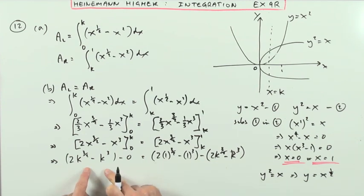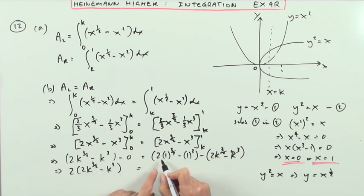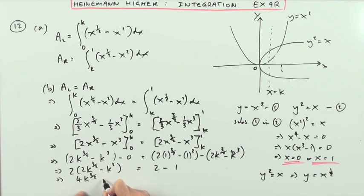Now that can go over and join this one. So there will be 2 of them on this side. So I've got 2 times 2k to the 3 upon 2 minus k cubed. It's equal to, and that part is just going to come to 2. Since I've got to work this out anyway, it's going to equal 2 minus 1. So that means now I've got 4k to the 3 upon 2 minus 2k cubed equals 1. And then if I bring it over to this side and read it that way, finally I've got 2k cubed minus 4k to the 3 upon 2 plus 1 equals 0.